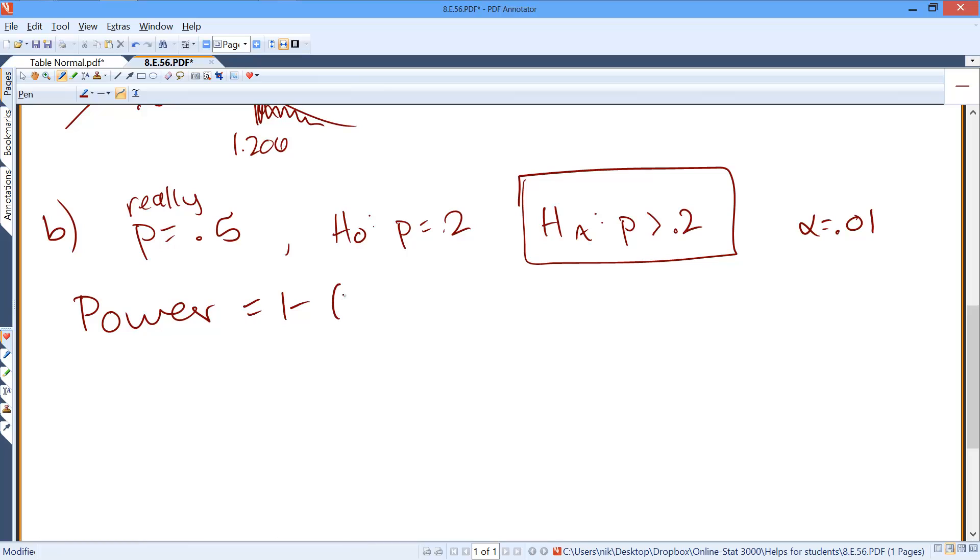Which is 1 minus beta. Basically, 1 minus the probability of a type 2 error.